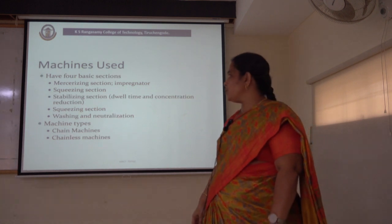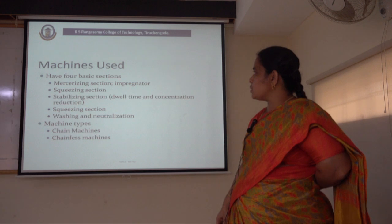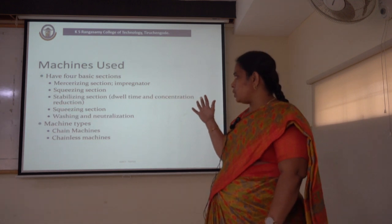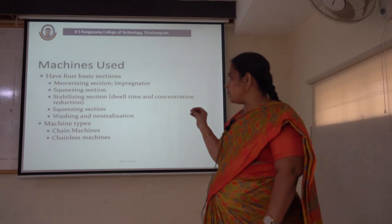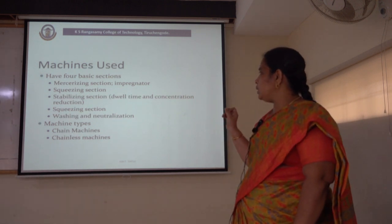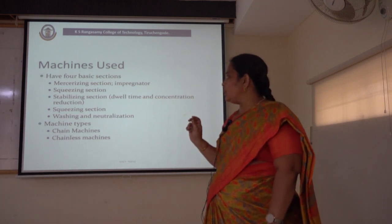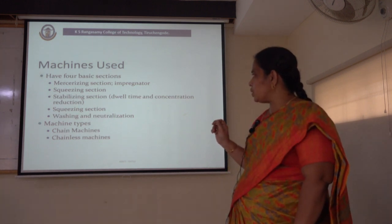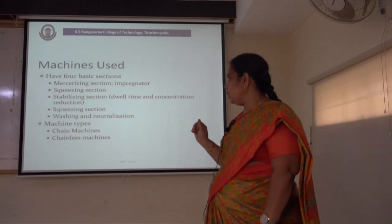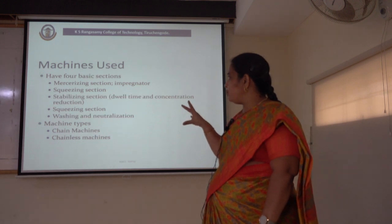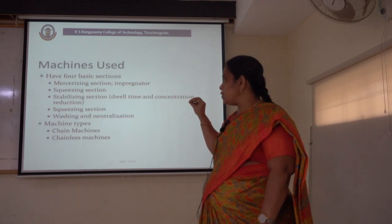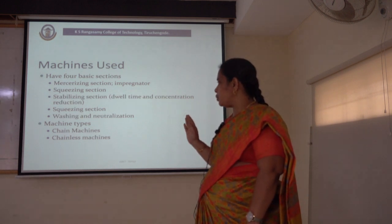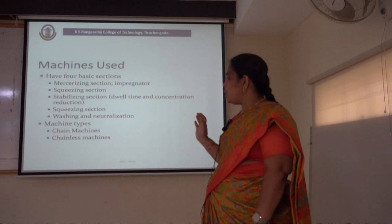The machines commonly used for the mercerization process and the basic units to be present in a mercerization machine are listed here. The basic sections in a mercerization machine are: first, the mercerizing section (the impregnator); followed by the rinsing section; followed by the stabilizing section, where we apply tension and reduce the concentration of alkali; followed by the rinsing section; and finally the washing and neutralization section. The two types of mercerization process are chain mercerization and chainless mercerization.